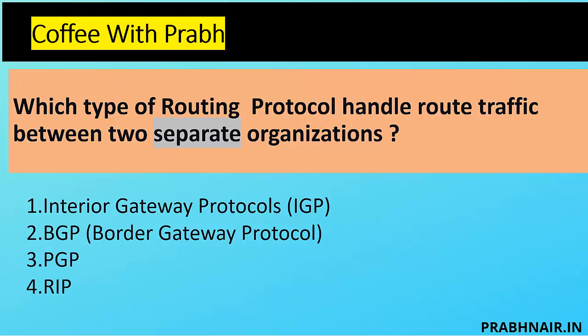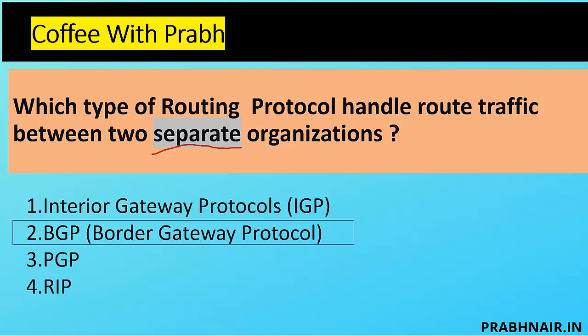The next question: which type of routing protocol handles routing traffic between two separate organizations? Now they're talking about two separate organizations, not within one. IGP is used within the enterprise. BGP, which is an EGP protocol — Border Gateway Protocol — is used between two enterprises. PGP is Pretty Good Privacy, and RIP (Route Information Protocol) is used within the enterprise. So the answer is BGP, the exterior gateway routing protocol for communication between two different enterprises.